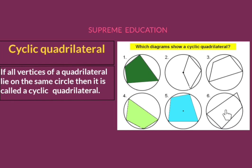In diagram number six, only three vertices lie on the same circle and the fourth one doesn't, hence this one is not a cyclic quadrilateral. So out of these six diagrams, only three quadrilaterals are cyclic and three are non-cyclic. This is about cyclic quadrilaterals; now we'll move towards the theorem.